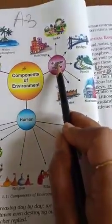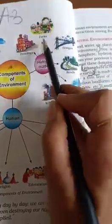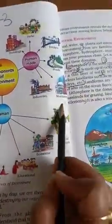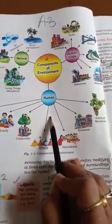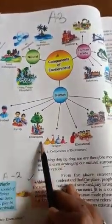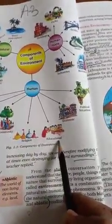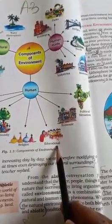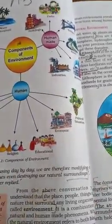On the right side, we have the human-made environment: parks, buildings, bridges, roads, industries, and monuments. And last, we have the human environment — our family, as an individual, our community, our religion, our educational institutions like schools and other institutions. Economic and political situations are also part of it.